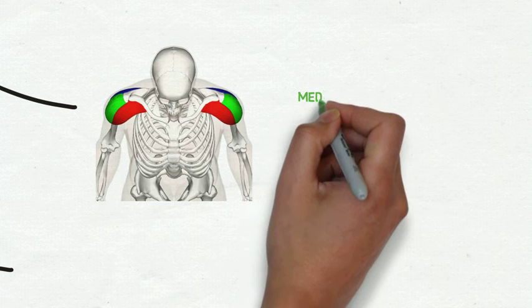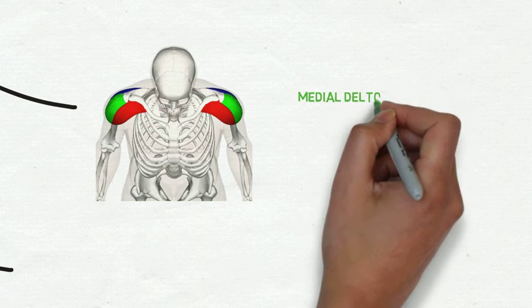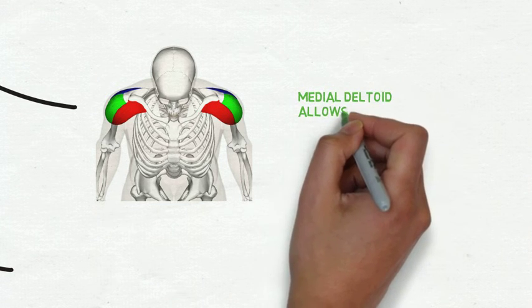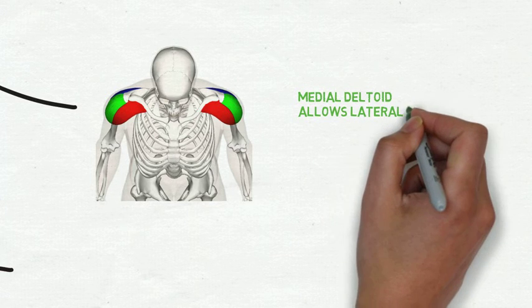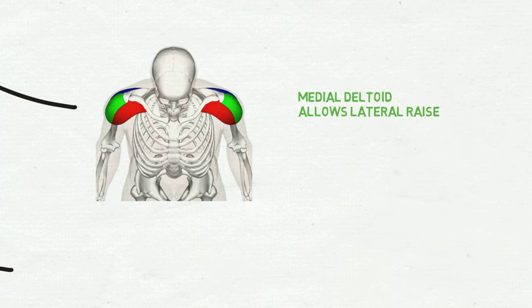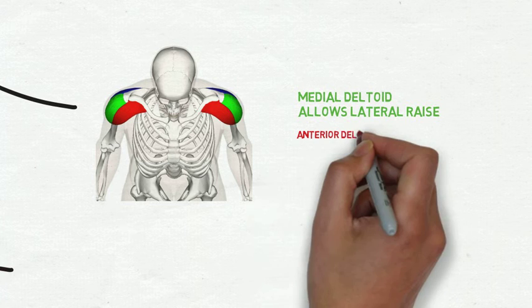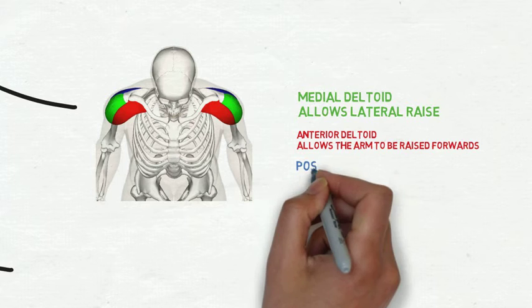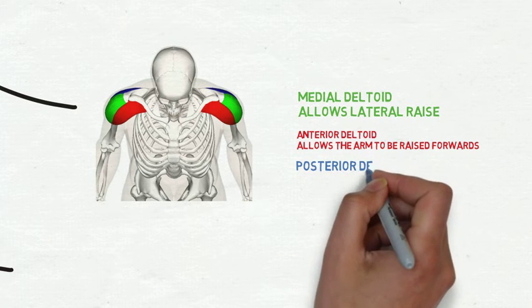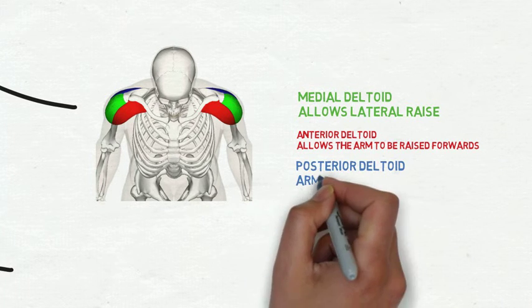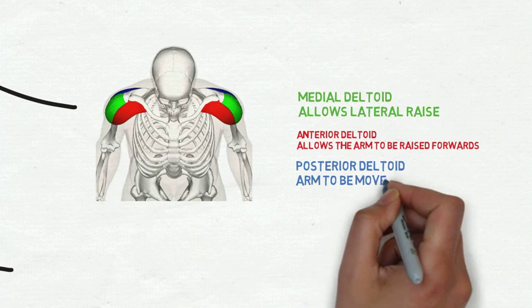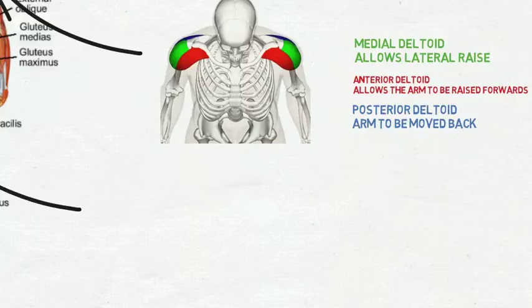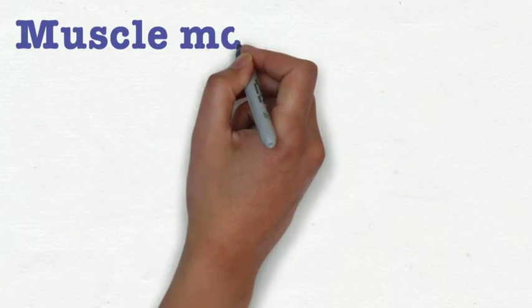And the other major differences, let's have a look at the deltoid here. Now instead of just saying the deltoid, we identify each one of the different sections. So you've got the medial deltoid which allows a lateral raise, the anterior deltoid which is allowing your arm to move upwards and forwards, and the posterior deltoid for the arm to be moved backwards. So that extra detail is where we're looking.